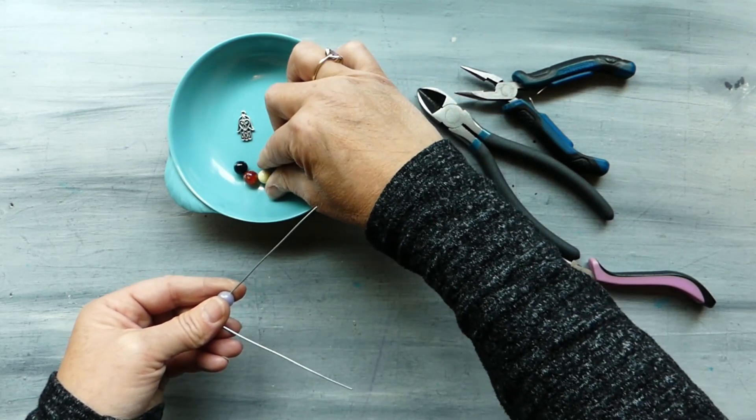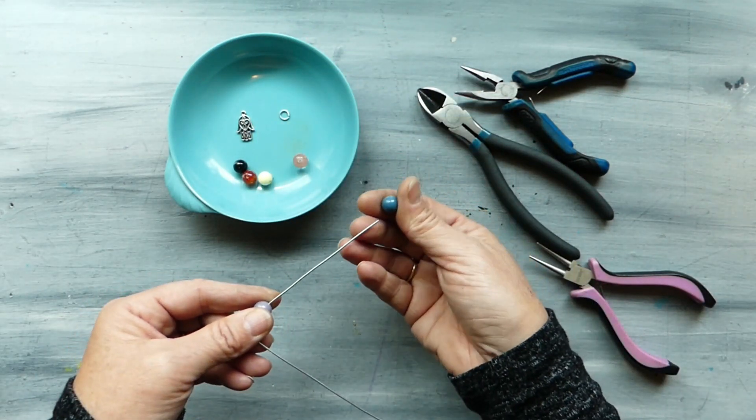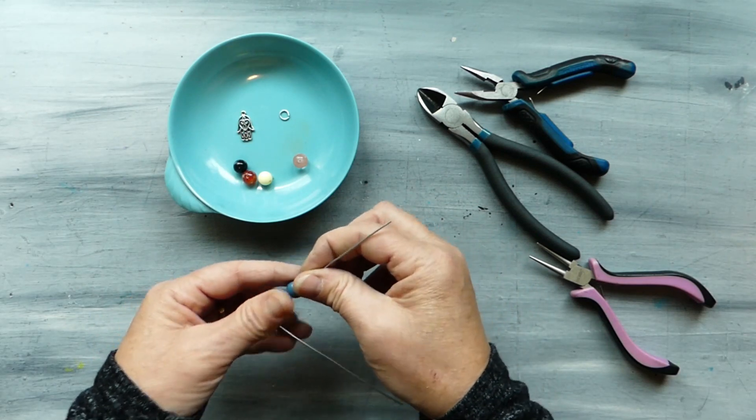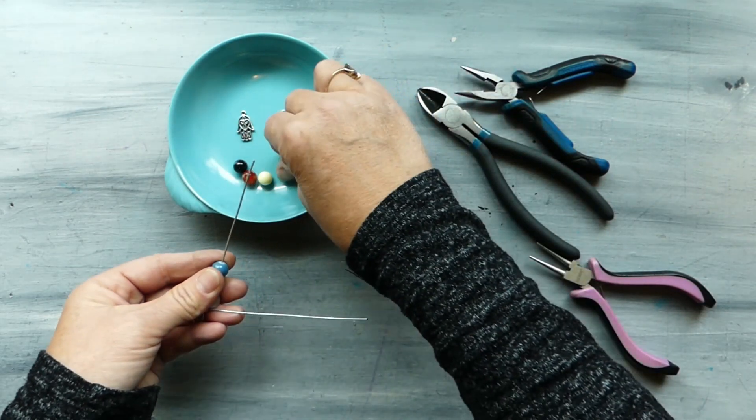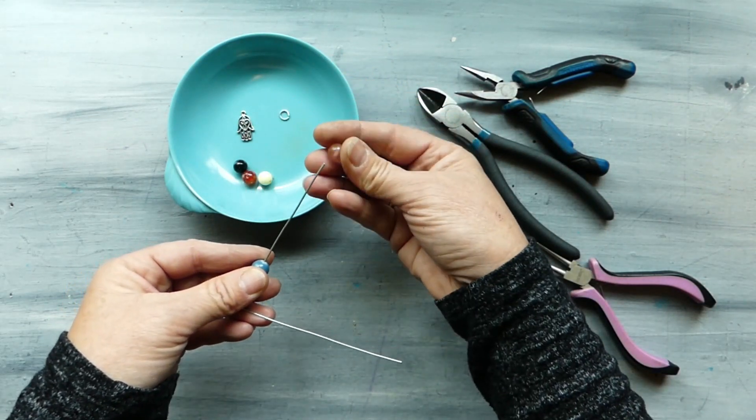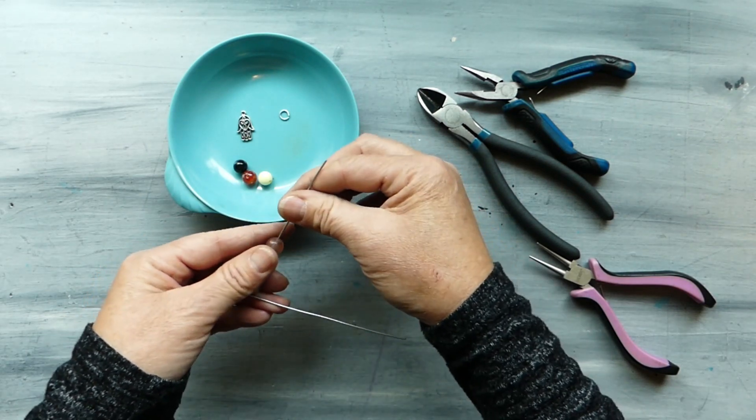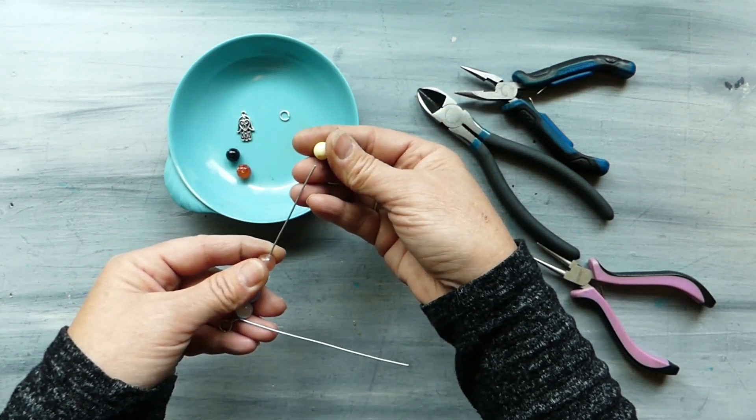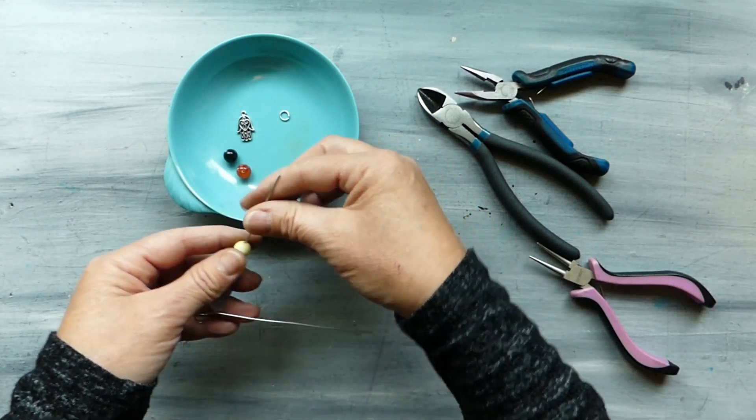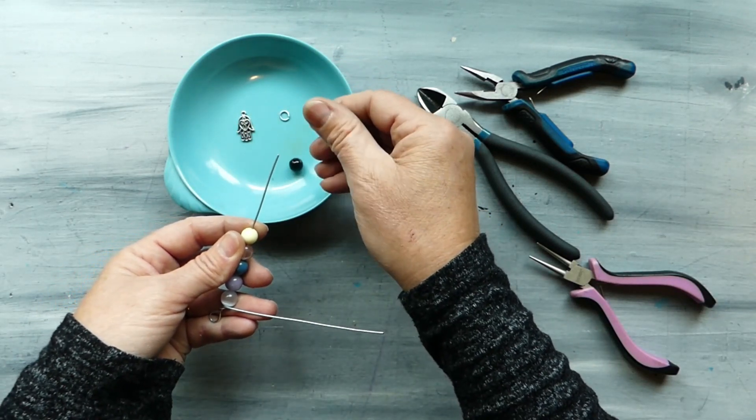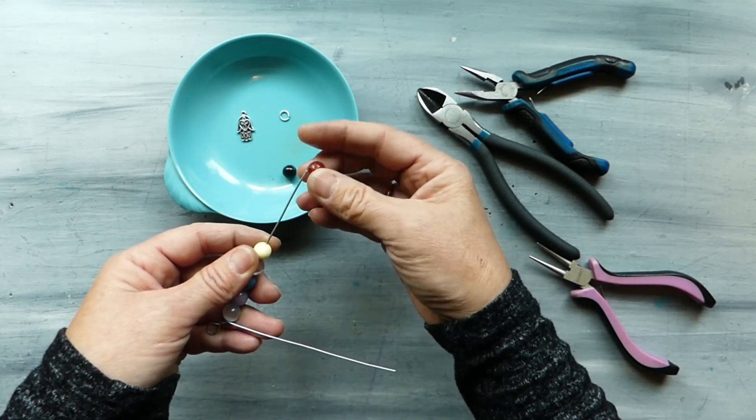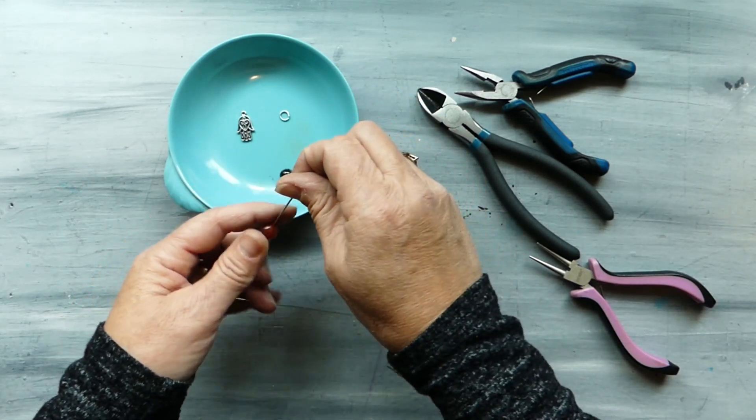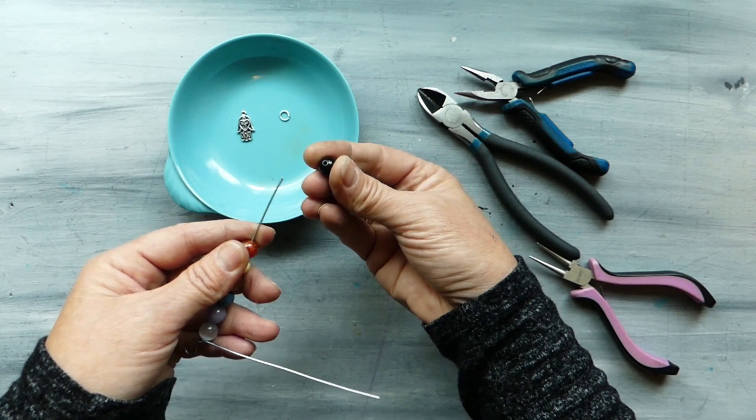And then we have a blue which represents sodalite and then we've got the pink which represents rose quartz, we have got a yellow which represents citrine, we have got an orange orangey red which represents a carnelian and then we have a black one which represents hematite.